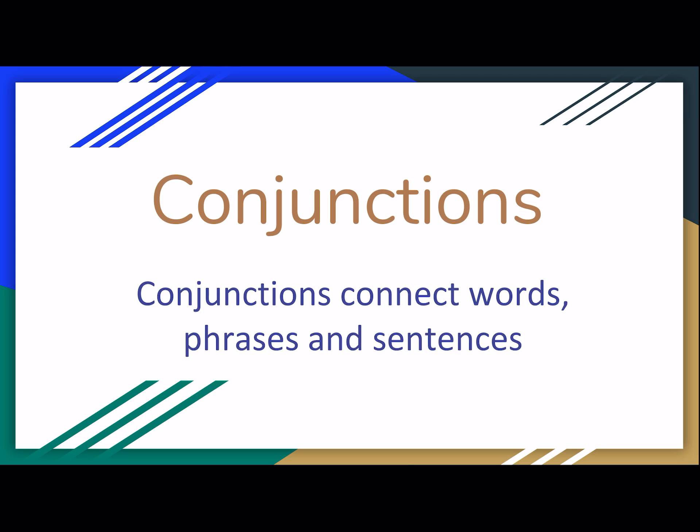Let's try it again using the same conjunction. "My sister can ride a bike." "My sister cannot drive." So she can ride a bike, but she cannot drive. If we combine these two sentences, we need to use the word "but" because it's contrasting. Our sentence would then be: "My sister can ride a bike, but she cannot drive."